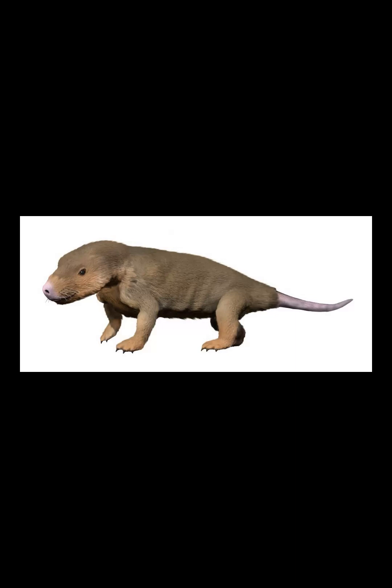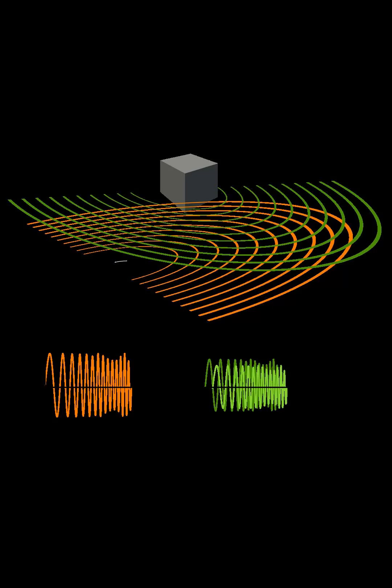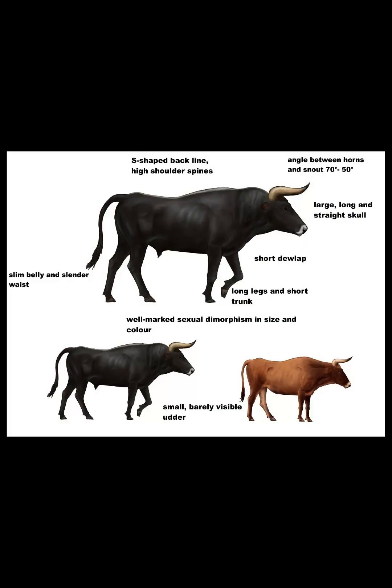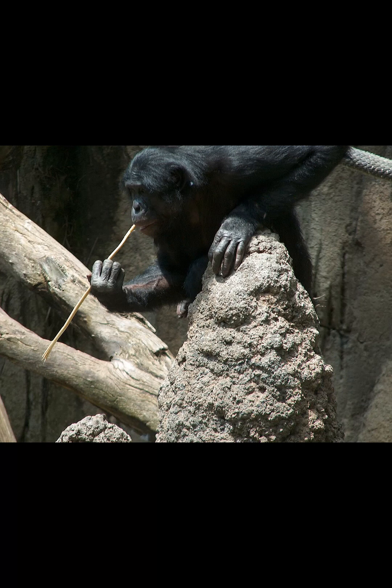Eusociality is the highest level of social organization. These societies have an overlap of adult generations, the division of reproductive labor, and cooperative caring of young. Usually insects, such as bees, ants, and termites, have eusocial behavior, but it is also demonstrated in two rodent species: the naked mole rat and the Damaraland mole rat.